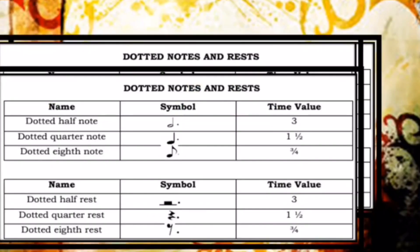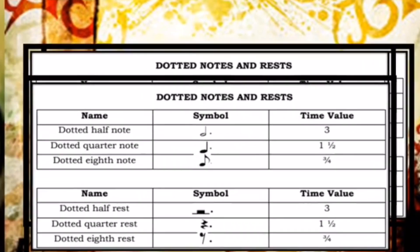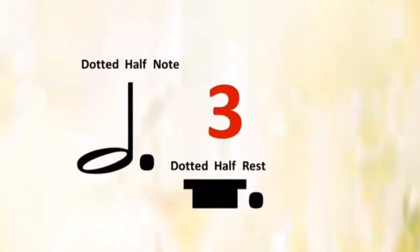Now, let's move to the dotted notes and dotted rests. These are the musical symbols of a dotted half note and dotted half rest. Dotted half note gets 3 beats of sound and dotted half rest gets 3 beats of silence.